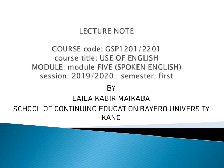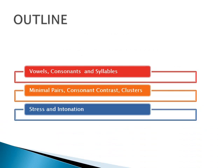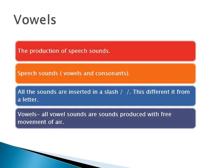Hello students, good day. Welcome to Module 5 of DSP2201 Use of English, which covers unspoken English, taught by Leila Kabiru. In this part of the module we are going to look at vowels, consonants, syllables, minimal pairs, consonant clusters, consonant contrasts, and stress. It is very important for students who are learning English as a second language, and also for students who are learning courses not related to English.